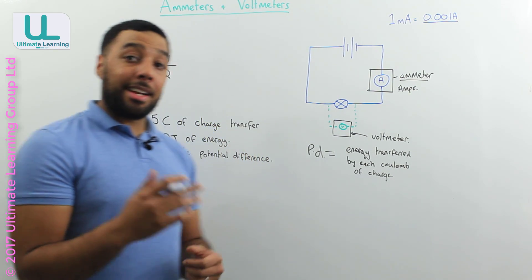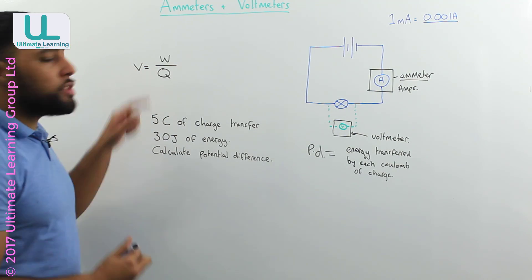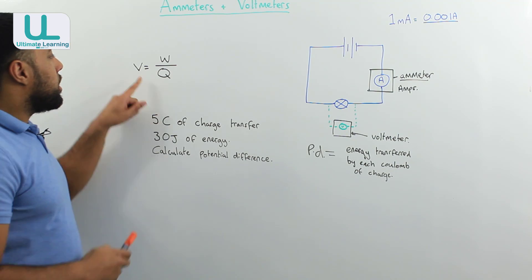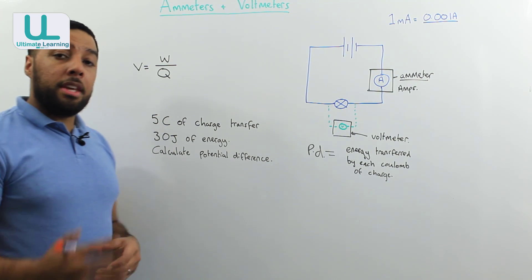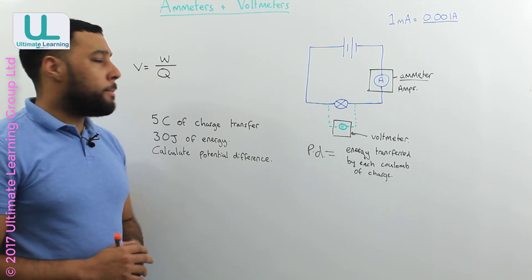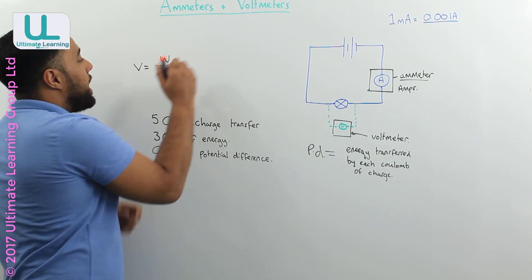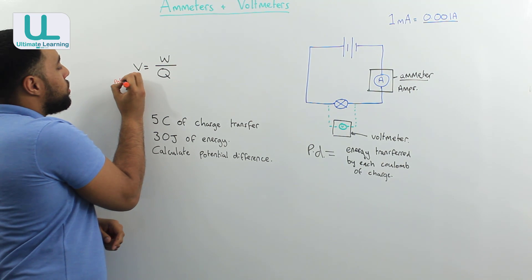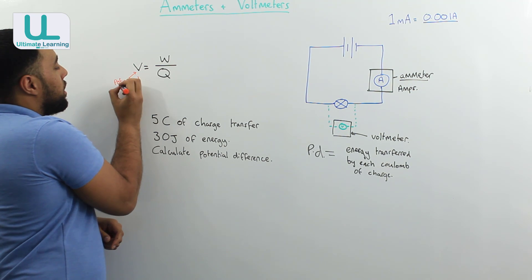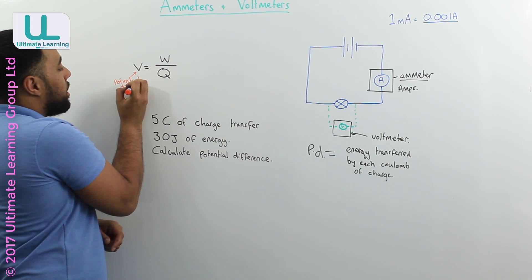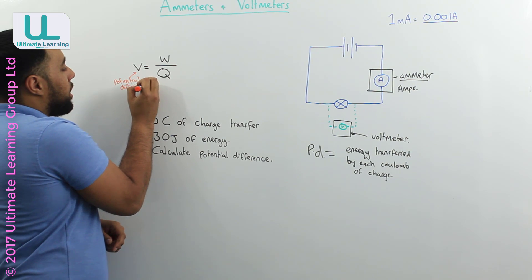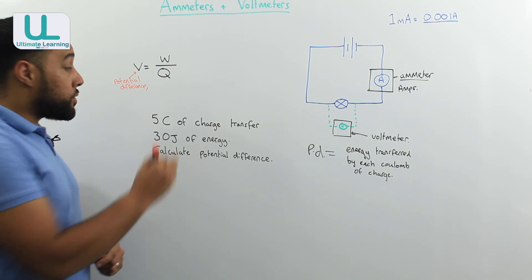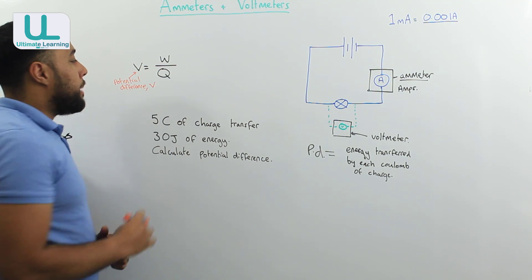For your exam you may be asked to calculate potential difference. So to calculate it, you'll need to use the equation on the board. They'll give you this equation in the exam so don't worry about learning it. Where the V, this stands for potential difference, and the unit for potential difference is volts, or the capital V.